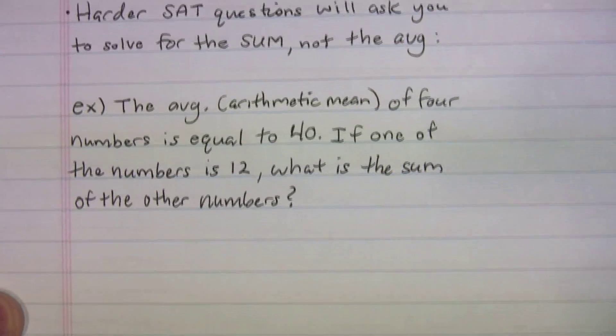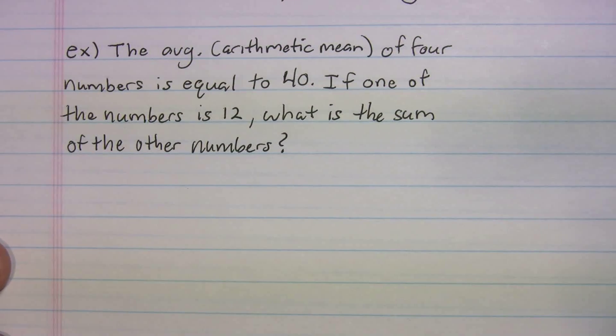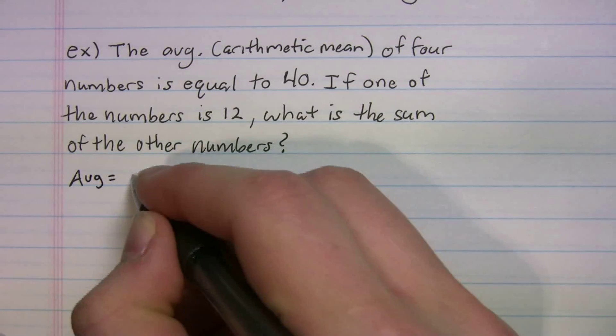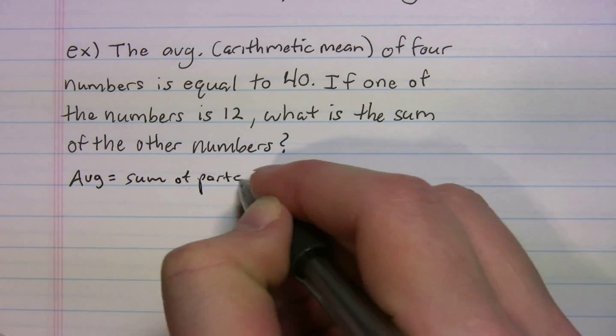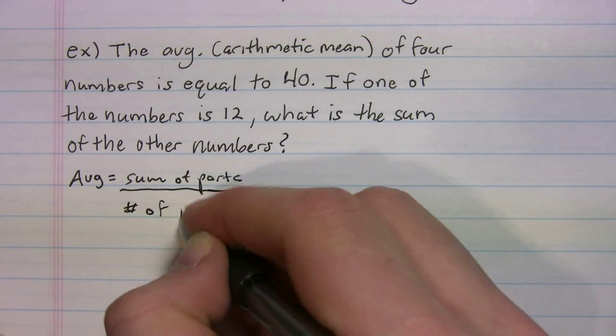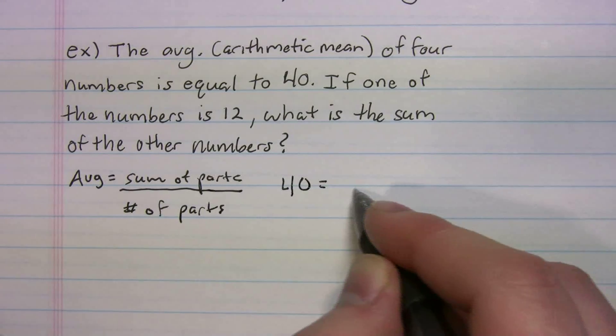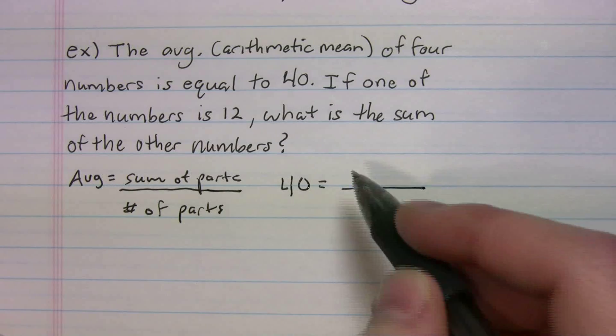All right. So we can take a look at a situation where this might be a harder medium one or like a hard question. The average or arithmetic mean of four numbers is equal to 40. If one of the numbers is 12, what is the sum of the other numbers? I think this was actually a medium on the January SAT, but it's something like this. We can go through this. So maybe what we'll do first is write our average formula. Average is sum of parts divided by number of parts. Okay. So what are we adding up here? The average of four numbers is equal to 40. So let's plug in. The average is 40.